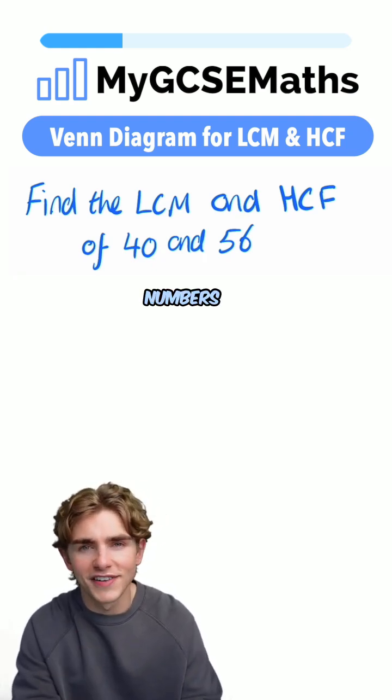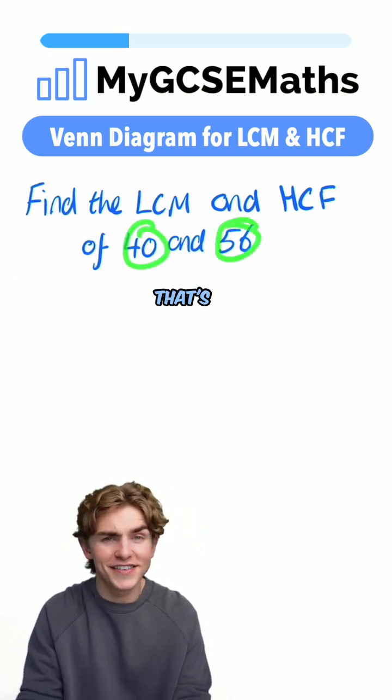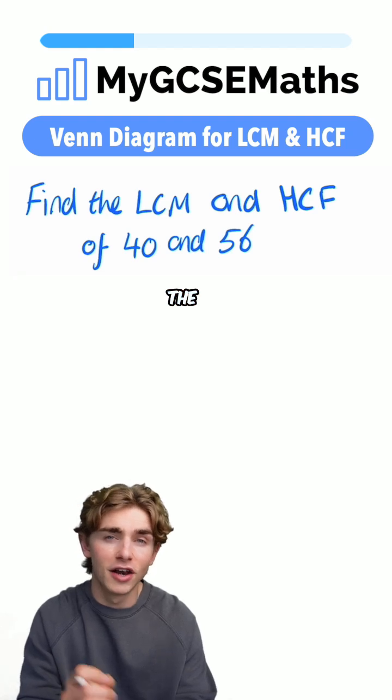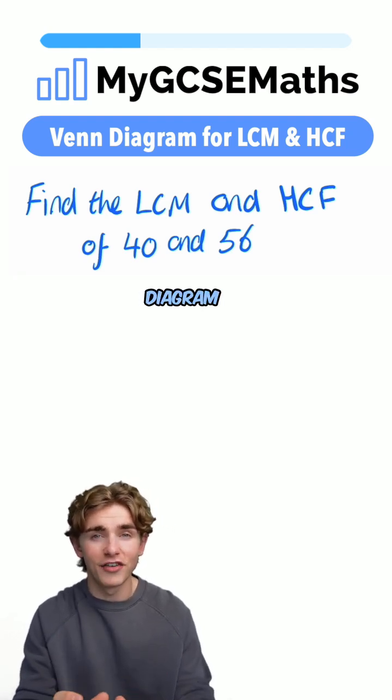However, for numbers like this, pretty big numbers, 40 and 56, that's going to be pretty long, especially finding the lowest common multiple. So we're going to use the Venn Diagram Method.